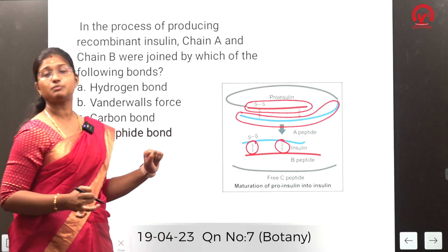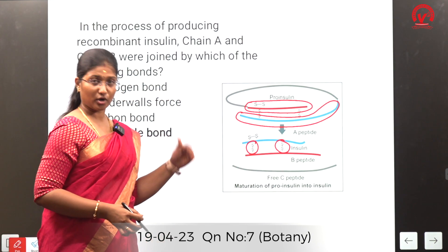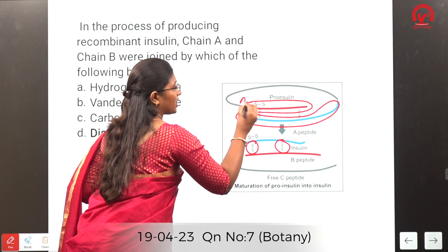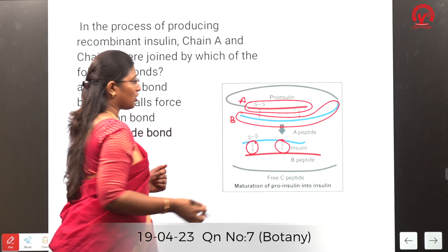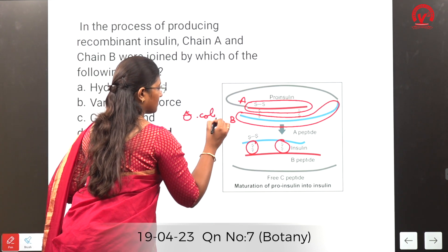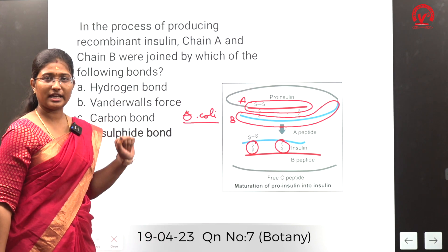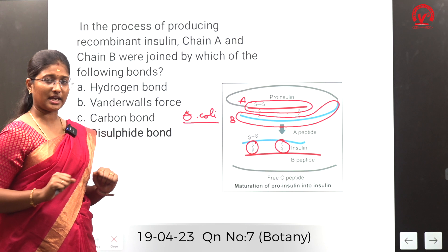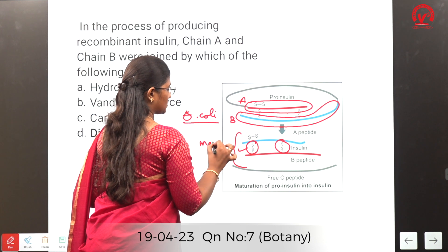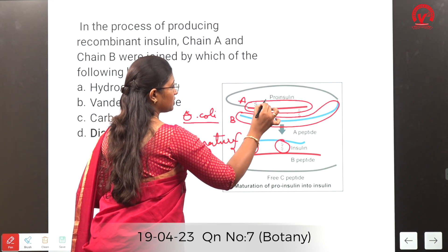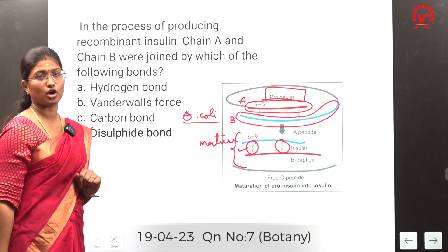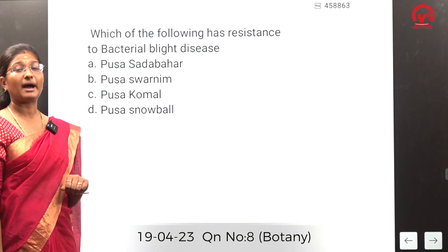The two different peptide chains are synthesized and they have disulfide bonds between them — this is how normal insulin is produced in the body. When producing recombinant insulin, chain A and chain B were synthesized, expressed in E. coli, extracted individually, and joined by disulfide bonds to produce mature insulin. The premature form is called pro-insulin. The correct answer is disulfide bond.